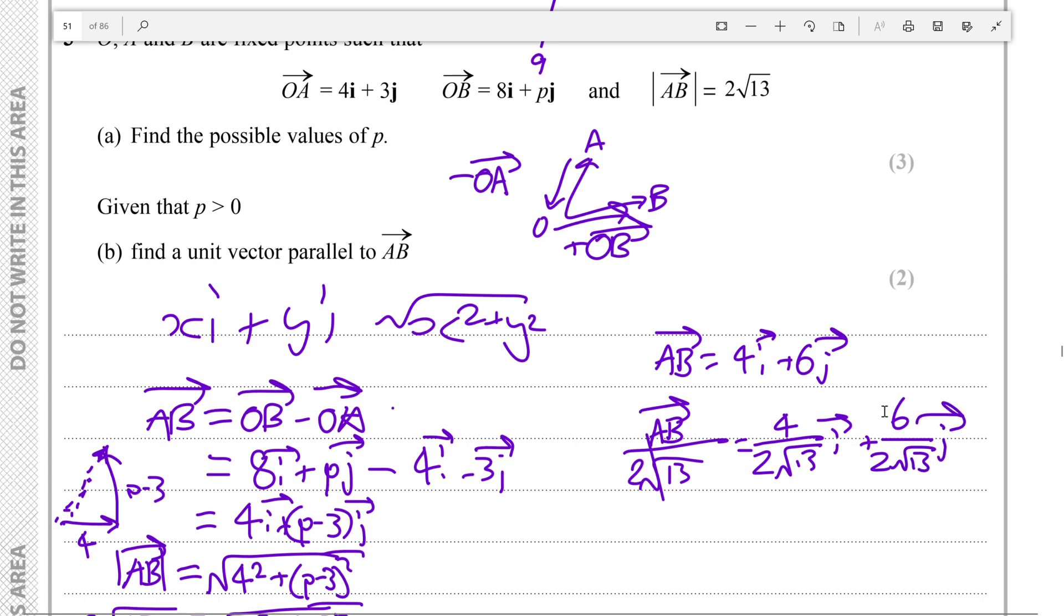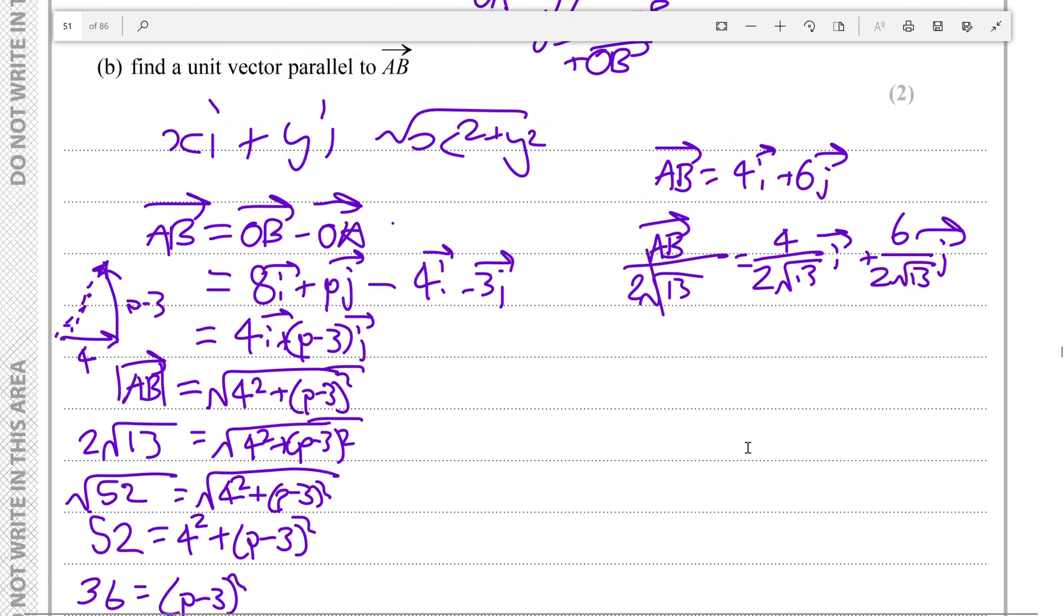Now this is where you need to use your skills from the chapter about surds to simplify this into its rational form. So you get that 4 over 2 just cancel out, and this is 2 over root 13 i plus 3 over root 13 j.